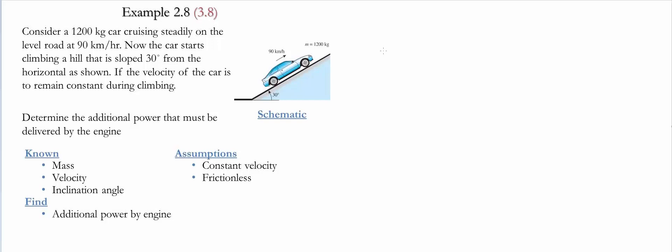In order to start the analysis we need to do a balance of energy. So what we need to find is the amount of work and that is going to be equal to the change in kinetic energy plus the change in potential energy. Notice that we said the velocity remains constant therefore the change in kinetic energy is going to be equal to zero.